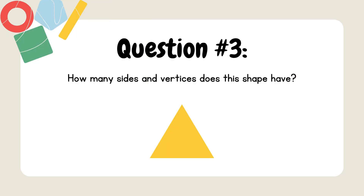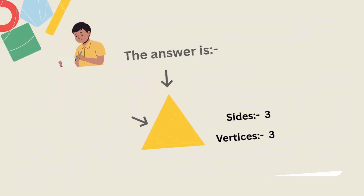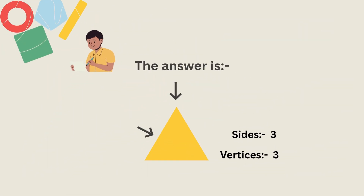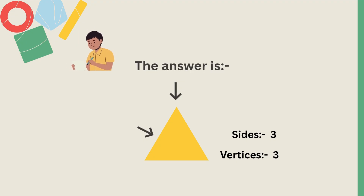Question 3. How many sides and vertices does this shape have? The answer is sides equal to 3 and vertices equal to 3.